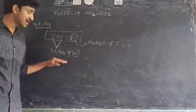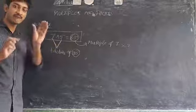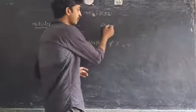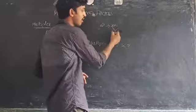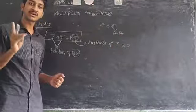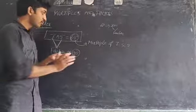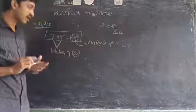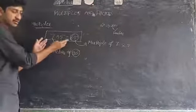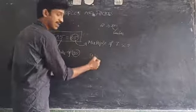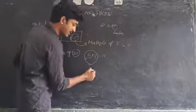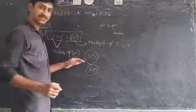A number is a product of two numbers, and those two numbers are called factors of that number. For example, 2 into 1 is equal to 2, so 1 and 2 are factors of 2. Also, 6 multiplied by 3 gives 18, so 18 is a multiple of 6 and 3.